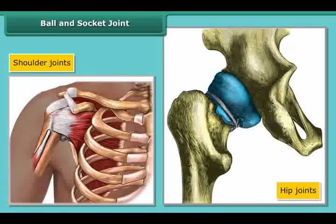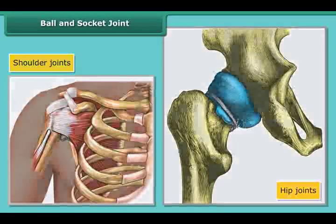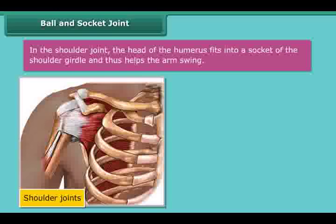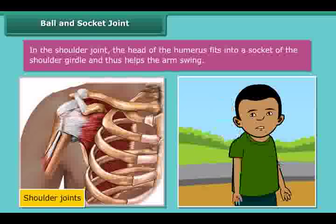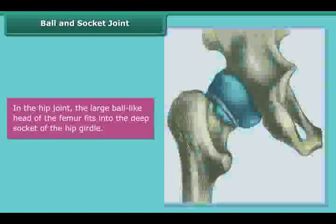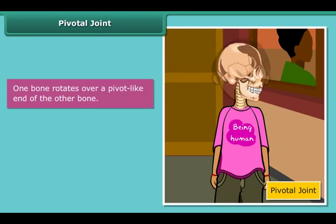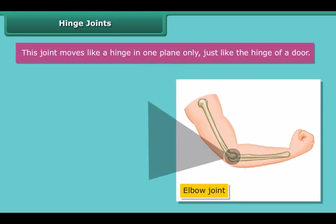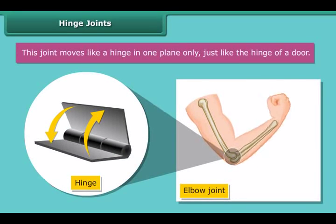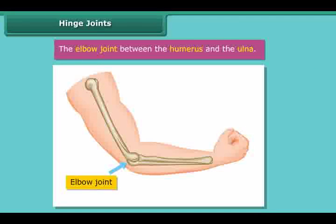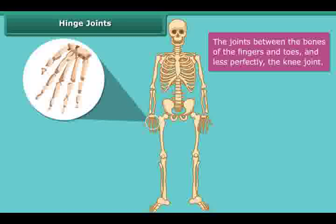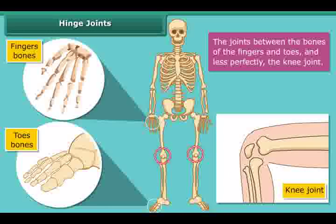Shoulder joints and hip joints are examples of ball and socket joints. In the shoulder joint, the head of the humerus fits into a socket of the shoulder girdle, and thus helps in arm swing. In a pivotal joint, one bone rotates over a pivot-like end of the other bone — like the skull rotating on the upper vertebra. A hinge joint moves in one plane only, just like the hinge of a door. The elbow joint, the joints between finger and toe bones, and the knee joint are examples of hinge joints.